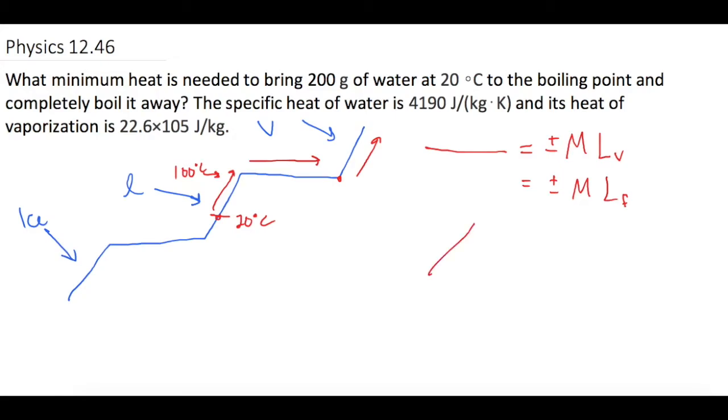Whenever you have a slanty part, that is going to be mc∆T. So we have to combine two of these things here. We want to know how much energy we have to add to it.